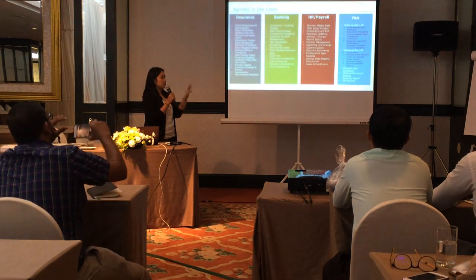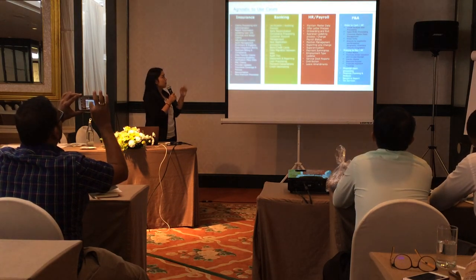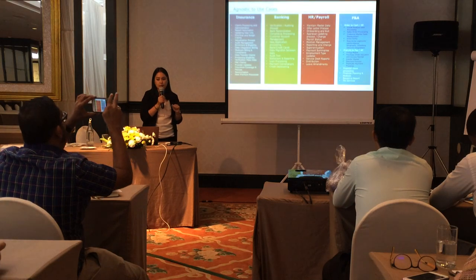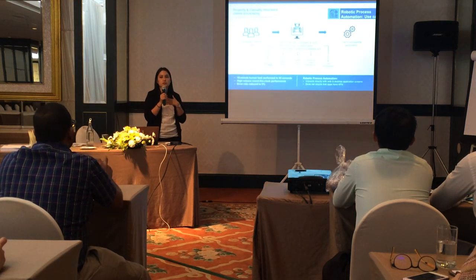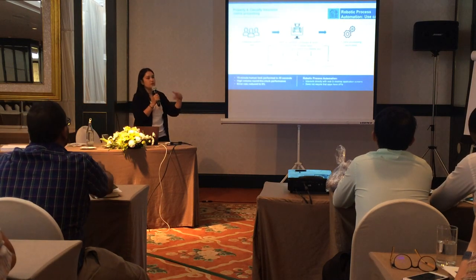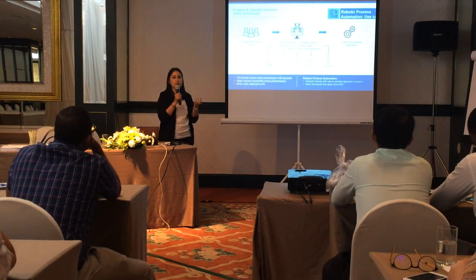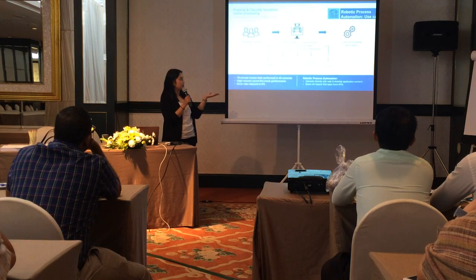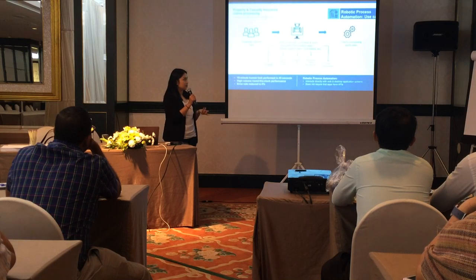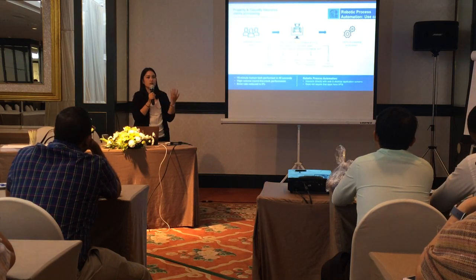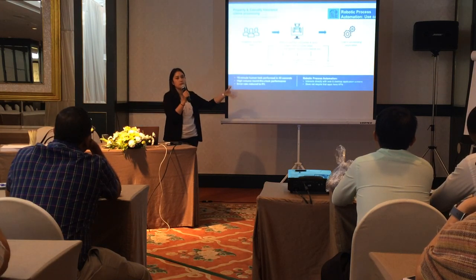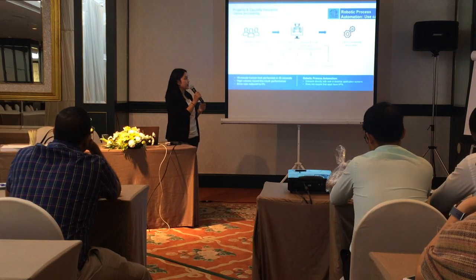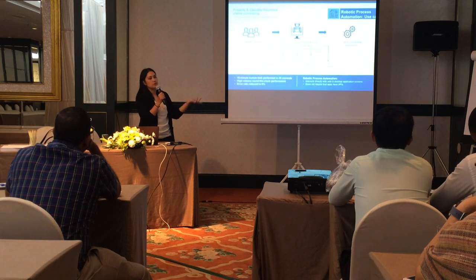These are use cases applied to specific industries. For insurance, we can apply RPA to claim processing — when a customer submits a claim, an officer must verify claim information across multiple systems such as Salesforce for customer data, a policy administration system for eligibility, a document management system, and possibly a list management system. The RPA bot can fetch, correlate, and sort information from these multiple applications and put the data into the claim processing app automatically.